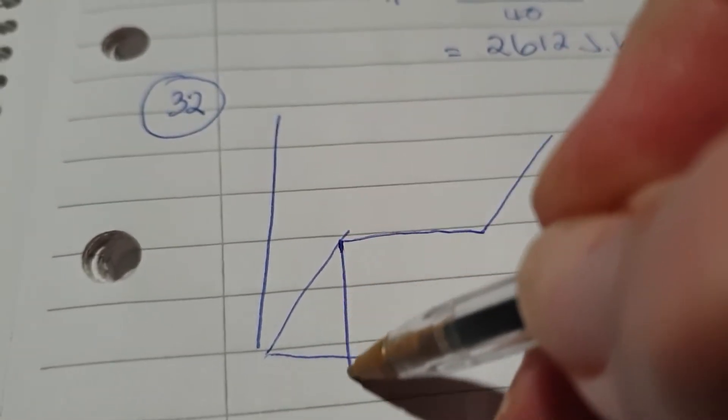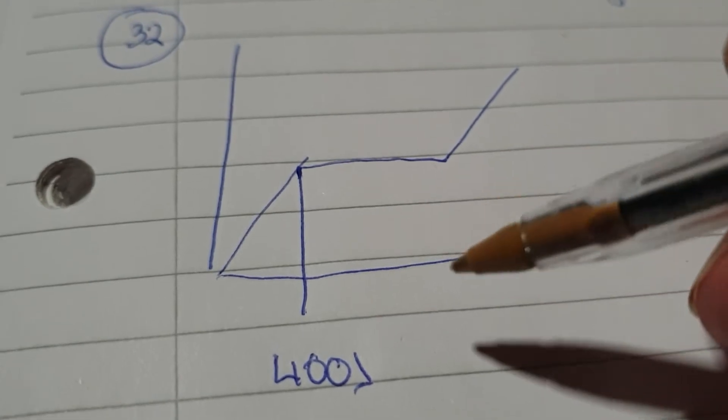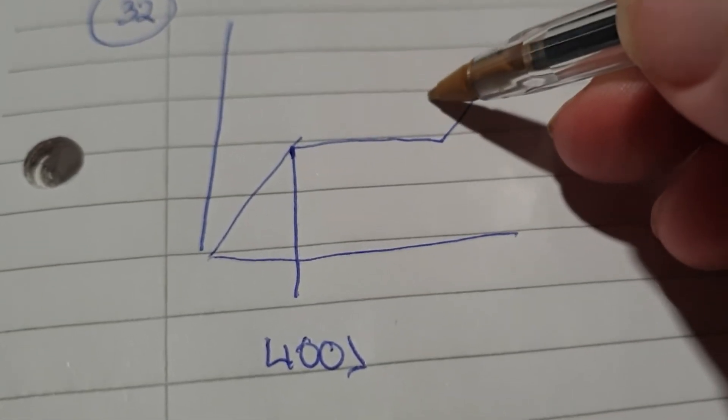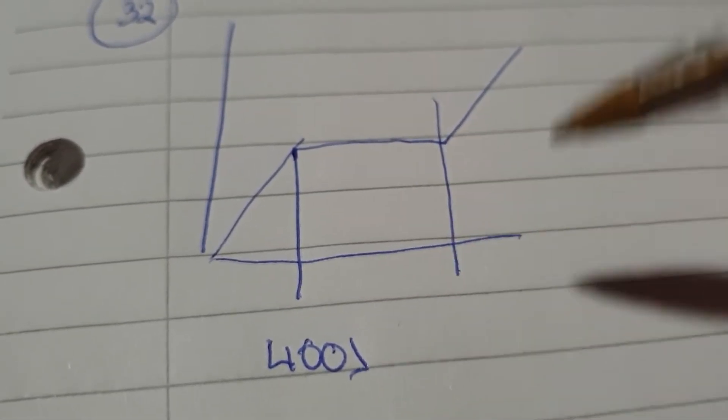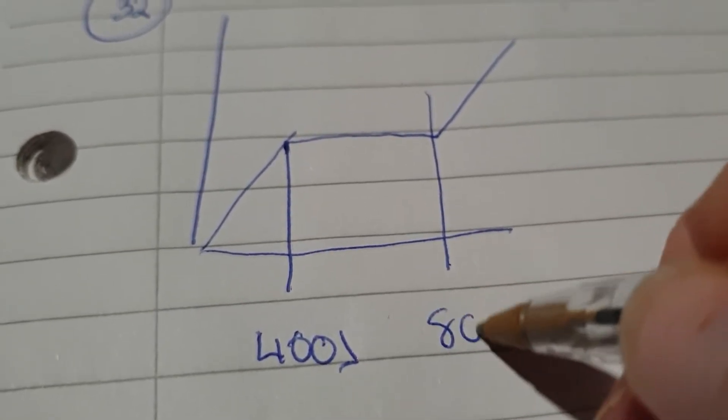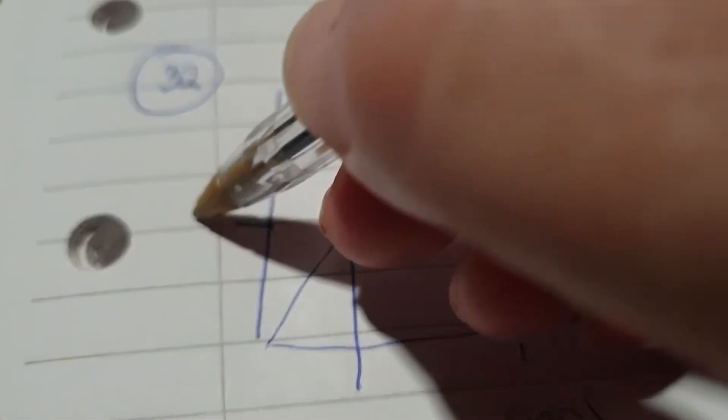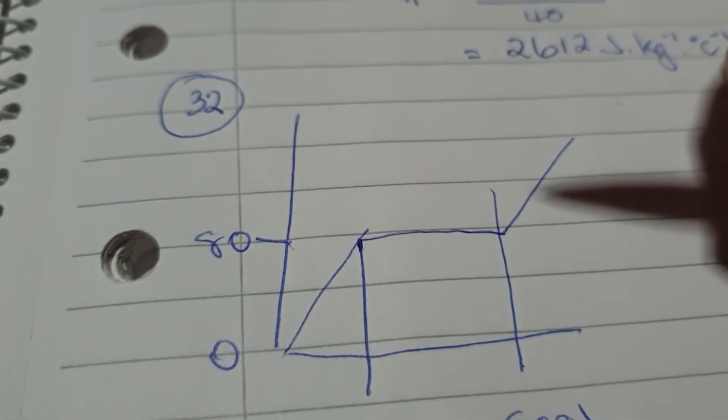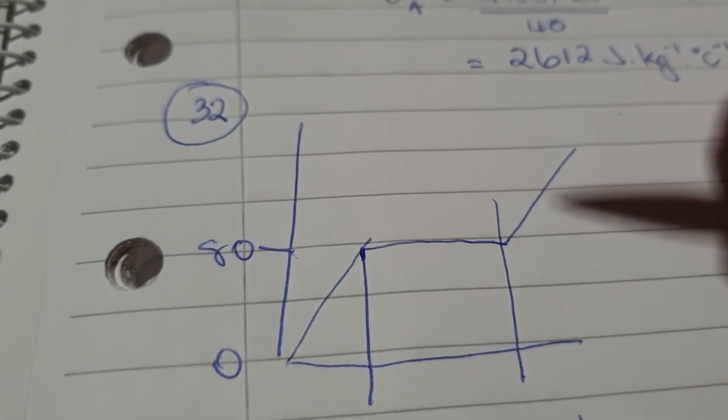And it's going to go... And this is 400 joules. And this is 800 joules. That's the important bit. And this was 80, and that was 0. I think that's all we need.